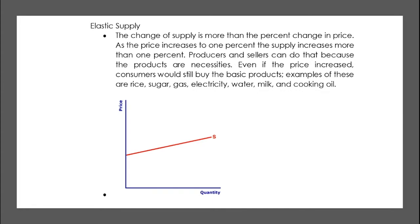The other type is elastic supply. The change of supply is more than the percent change in price — as the price increases by one percent, the supply increases by more than one percent. Producers and sellers do this because even if the price increases, consumers would still buy basic necessity products such as rice, sugar, gas, electricity, water, milk, and cooking oil, as they are very important to consumers. Elastic supply in midpoint computation is equal to more than one. The graph or curve will look like this.